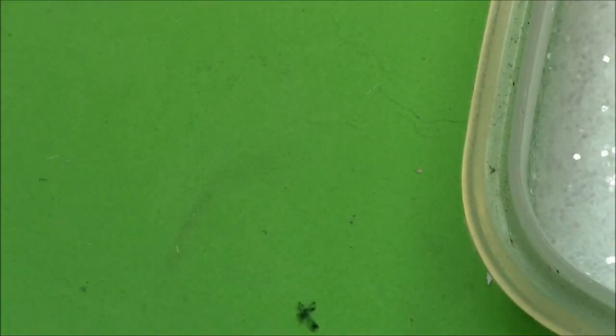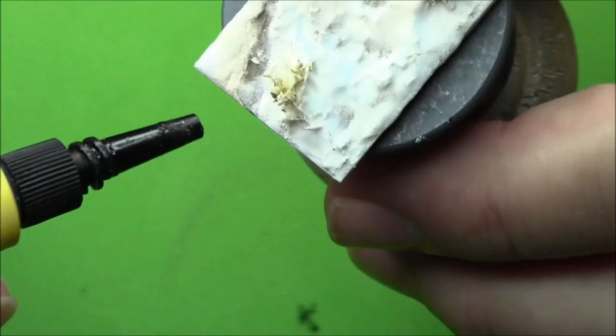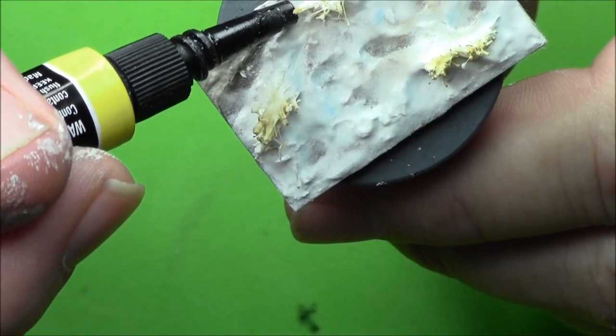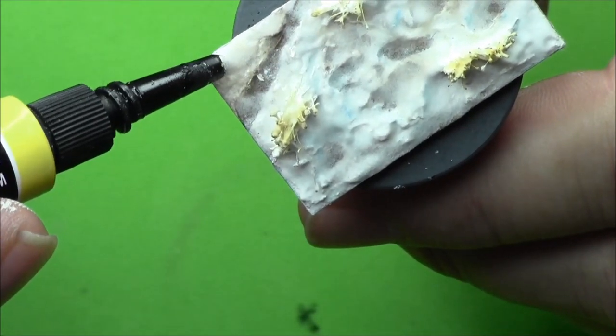Now I just take regular superglue, not gel but just regular thin superglue, and apply it randomly scattered about the base.